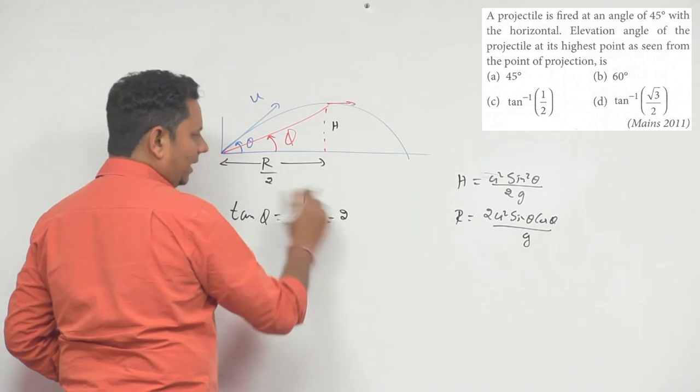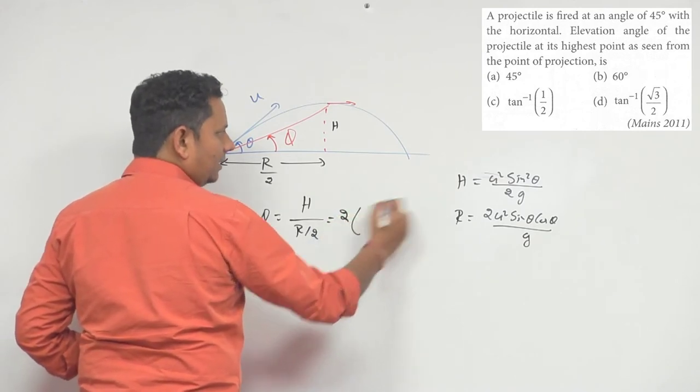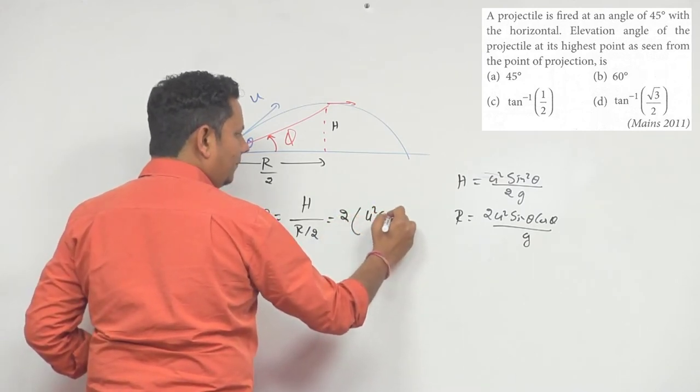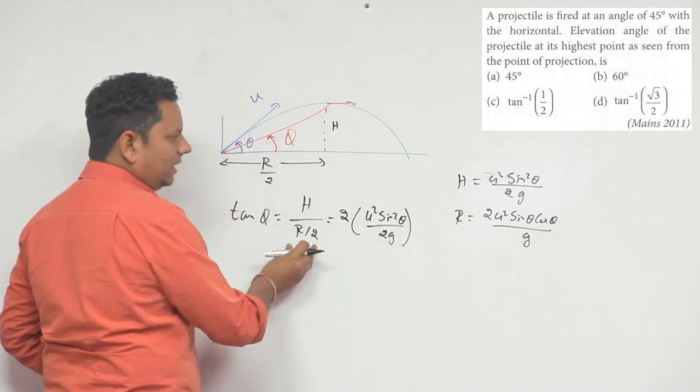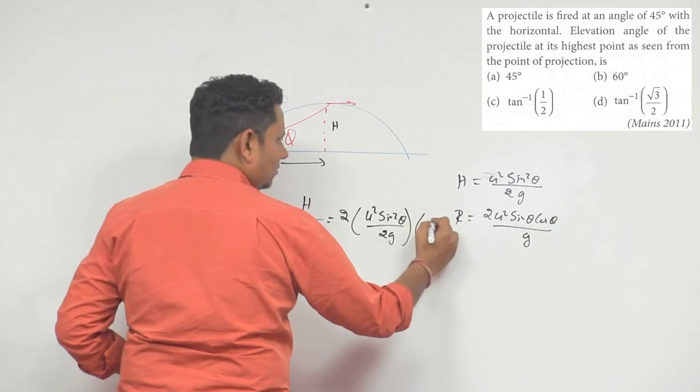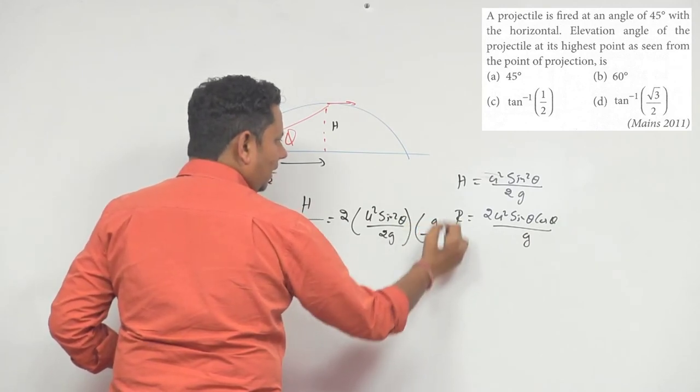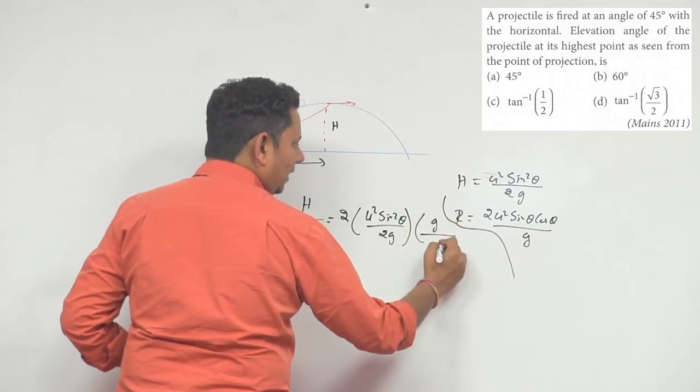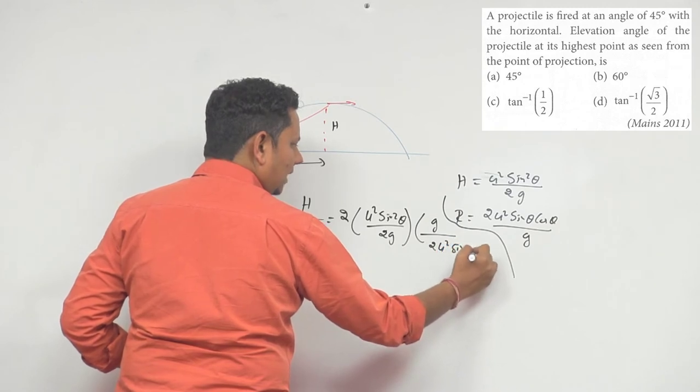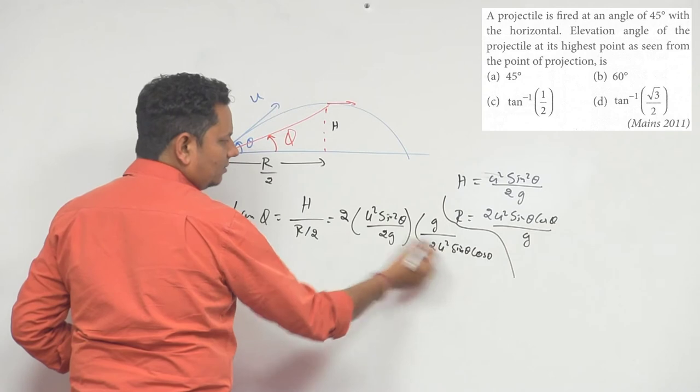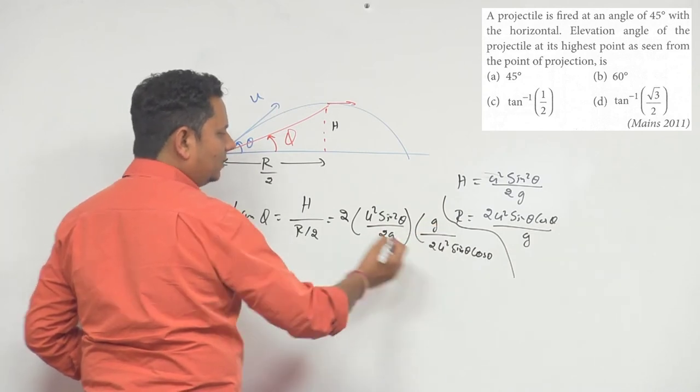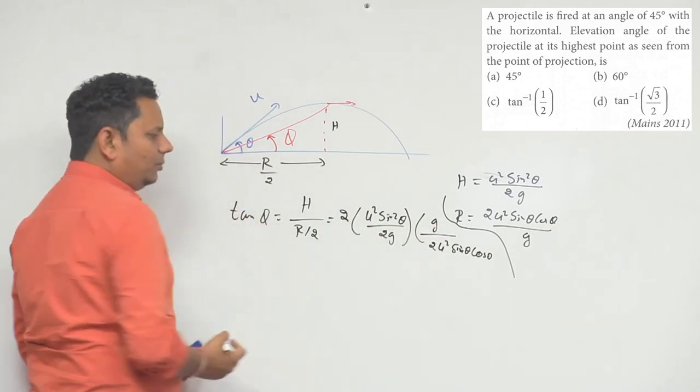Substituting the values: this will be u squared sin squared theta divided by 2g, and this will be u squared sin theta cos theta. Sin theta cancels, u squared cancels, and the 2s cancel.